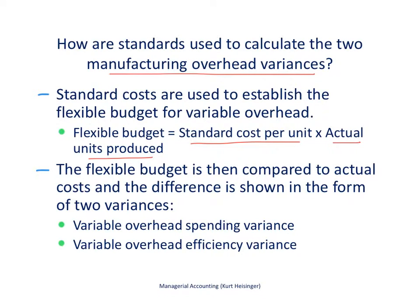The idea is to compare the flexible budget with the actual variable manufacturing overhead costs incurred, and then try to figure out why we had a difference. We have two different variances to help determine why: the variable overhead spending variance and the variable overhead efficiency variance.